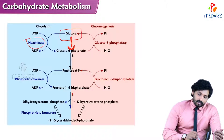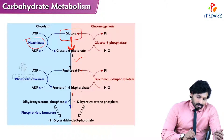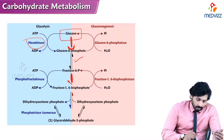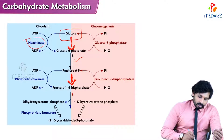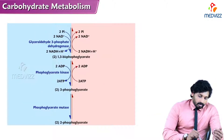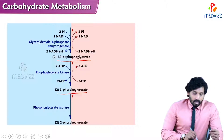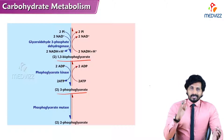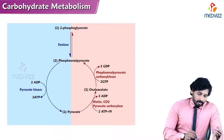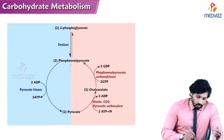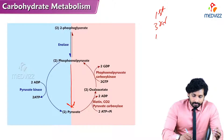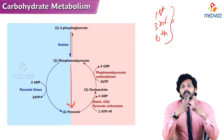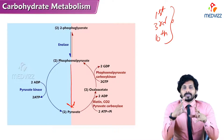Glucose-6-phosphate to fructose-6-phosphate is reversible, but fructose-6-phosphate to fructose-1,6-bisphosphate is again a one-way irreversible reaction — there is a block with no reverse direction. Continuing down, fructose-1,6-bisphosphate to glyceraldehyde-3-phosphate and onward through 1,3-bisphosphoglycerate to 3-phosphoglycerate are reversible. The tenth step, where phosphoenolpyruvate is converted to pyruvate, is also a one-way reaction. So totally the first, third, and tenth steps are irreversible.